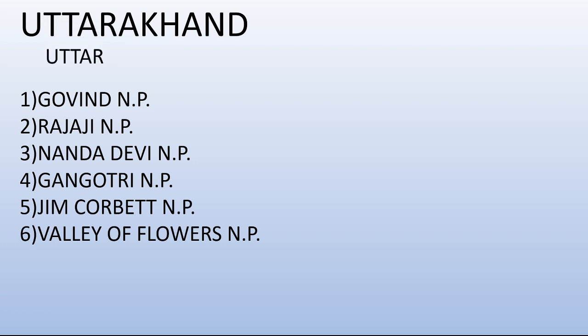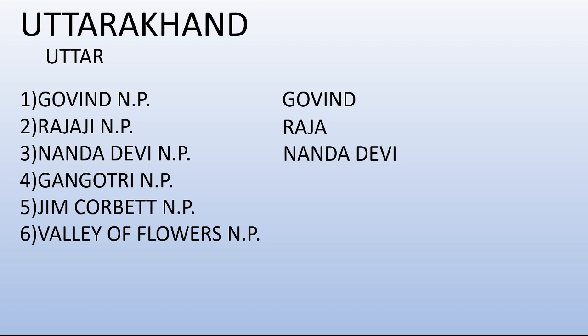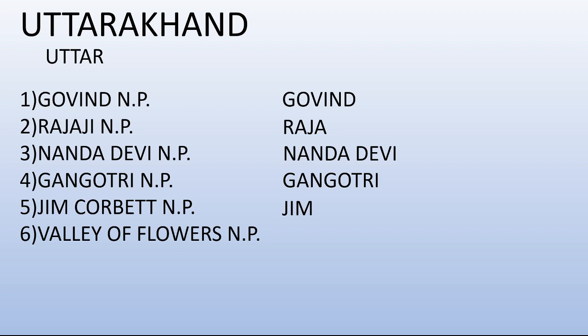From Uttarakhand I have taken the keyword 'Uttar'. Don't confuse Uttarakhand with Uttar Pradesh — when I taught Uttar Pradesh's National Parks I used 'UP', like 'UP ke Nawab'. For Uttarakhand I have taken 'Uttar'. From Govind NP I took 'Govind', from Rajaji NP 'Raja', from Nanda Devi NP 'Nanda Devi', from Gangotri 'Gangotri', from Jim Corbett 'Jim', and from Valley of Flowers 'Flowers'.